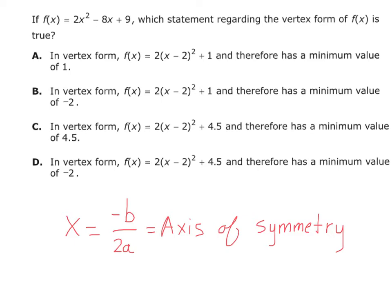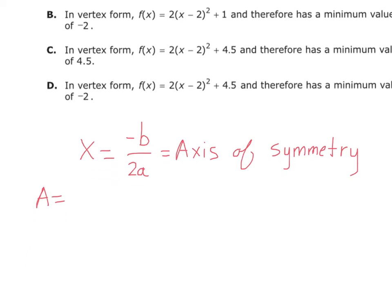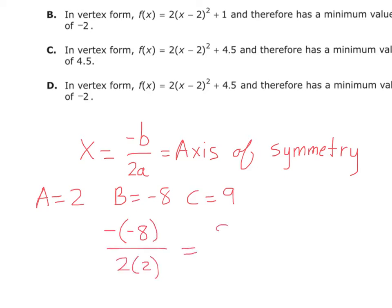Once we know the x value, we can plug it back in the equation to get the y value. So let's do negative b over 2a to get our axis of symmetry. We have a equals 2, b equals negative 8, and c equals 9. So it's going to be negative b over 2 times a, which is 8 over 4, which is 2. So your axis of symmetry is 2.